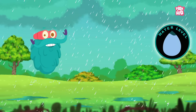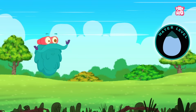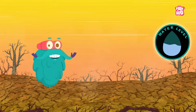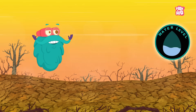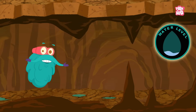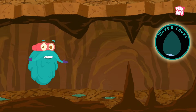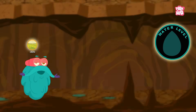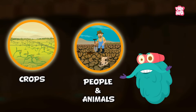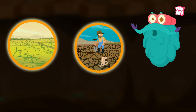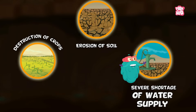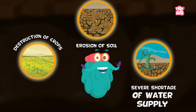Droughts are usually defined as extended periods of time with less than average rainfall, causing a water shortage on the surface, in the atmosphere, or in the groundwater levels. It truly becomes a disaster when it begins to affect crops and the lives of people and animals alike. Droughts can lead to the destruction of crops, erosion of soil, severe shortage of water supply, etc.